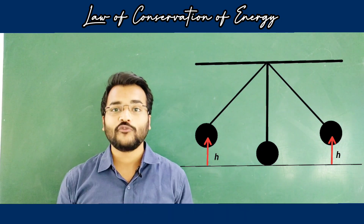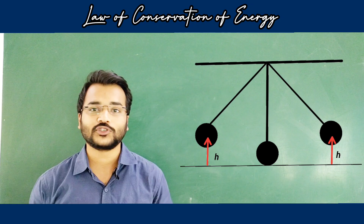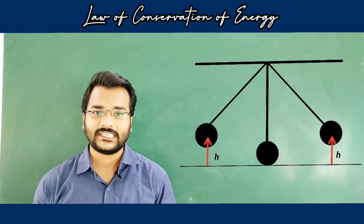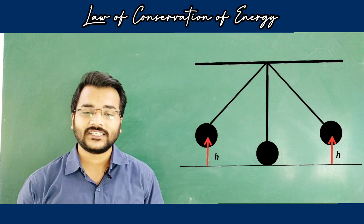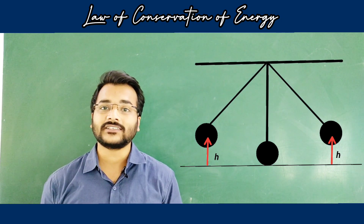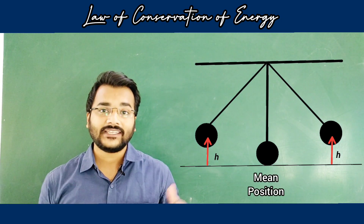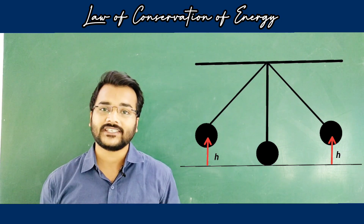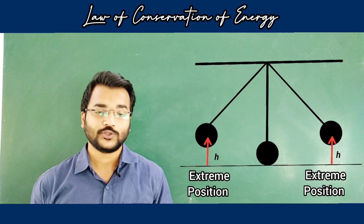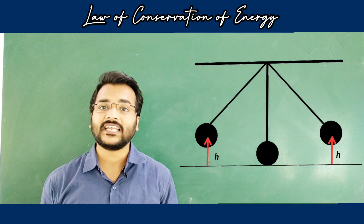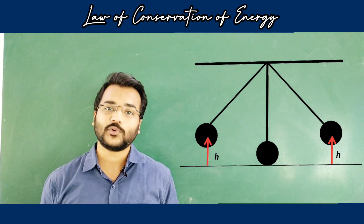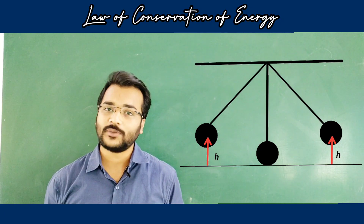When we talk about the movement of a pendulum, there are three most important positions which we need to analyze. In this diagram you can see that the center position is called the mean position, and the other two positions at the ends are called the extreme positions. We will be comparing the mechanical energies at all three of these points.